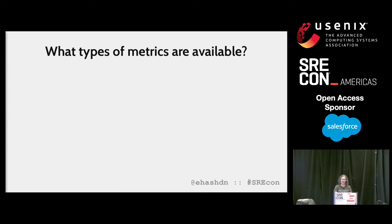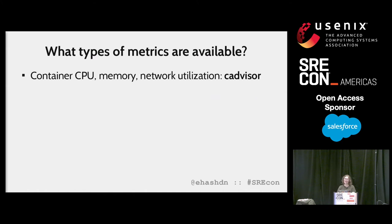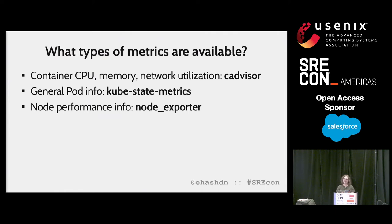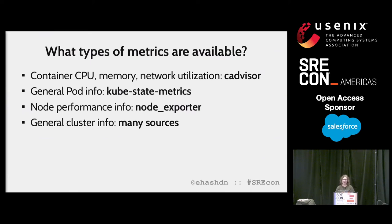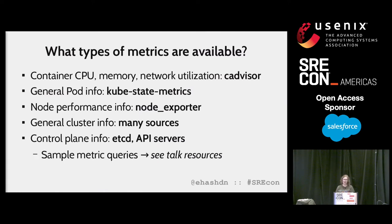From these metrics sources, let's take a look at what kinds of information we can get from where. Container performance information such as CPU, memory, and network utilization are currently exported by cAdvisor. General pod information — pod IP, what node the pod is scheduled on, pod controller type, container image, number of container restarts — is mainly available from kube-state-metrics. Node performance info from NodeExporter gives us a detailed system view of CPU load, memory usage, and networking stats. General cluster info such as number of running pods per kubelet, number of nodes online, and overall resource utilization is available from the kubelets, cAdvisor, and kube-state-metrics. Control plane info is exported by etcd, the API servers, and other control plane components, with metrics including database and write performance, uptime, request counts, and latencies. For sample queries and reference time series, take a look at the reference code I posted on GitHub.